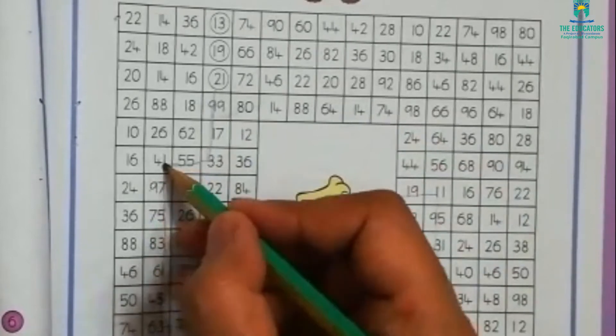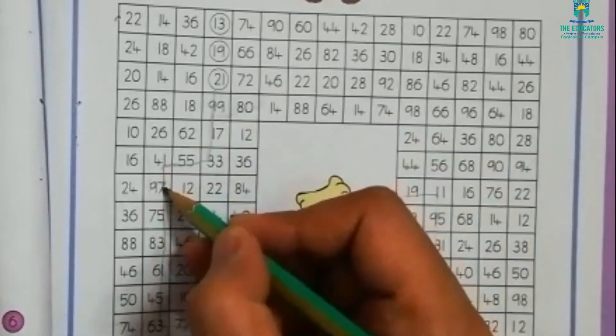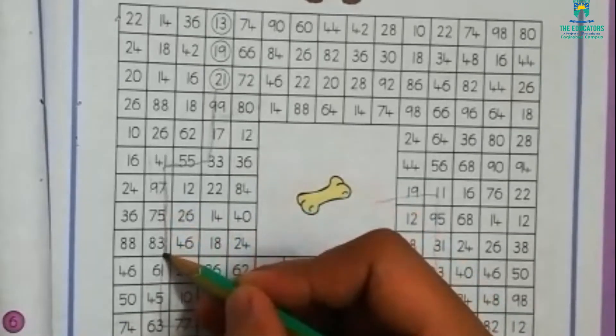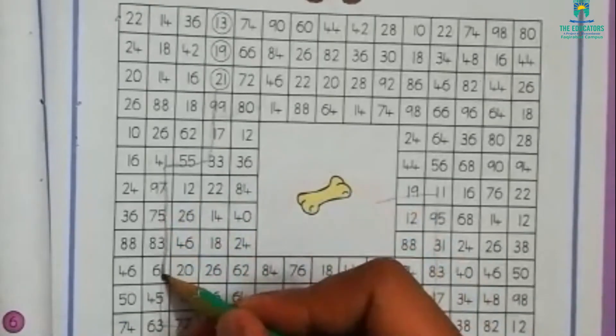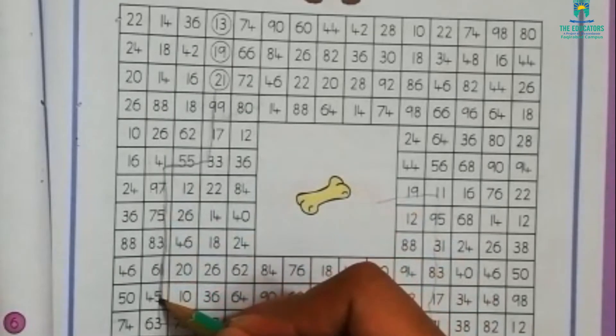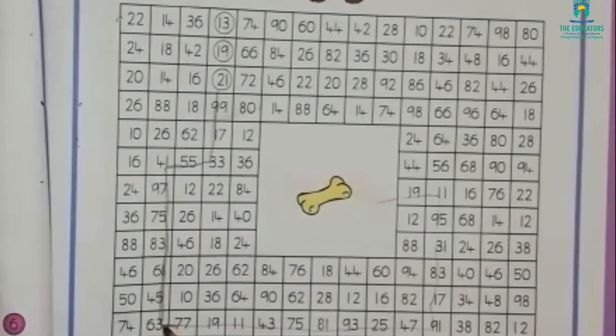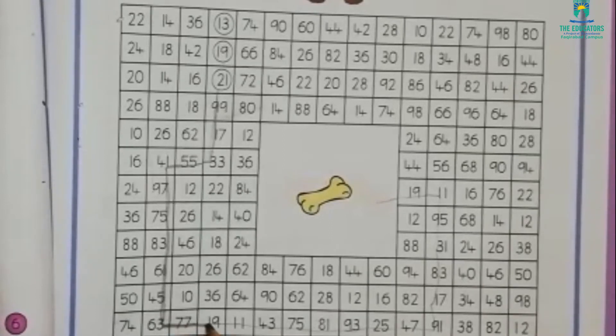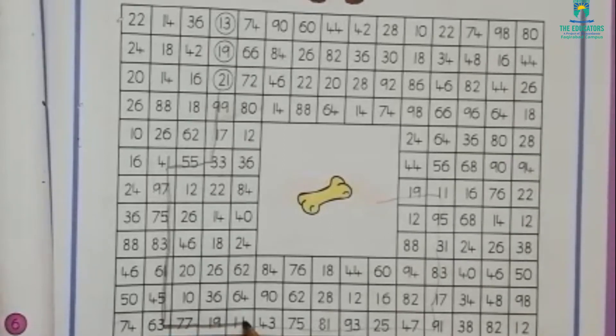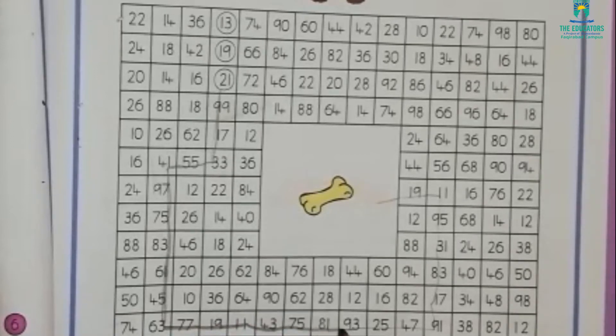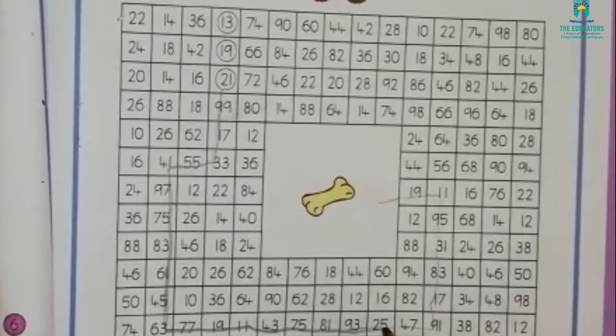From 55 to 41, then 97, 75, 83 is odd number, 61 is also odd number, 45, 63. Move from 63 to 77, then 19, 11, 43, 75, 81, 93, 25.